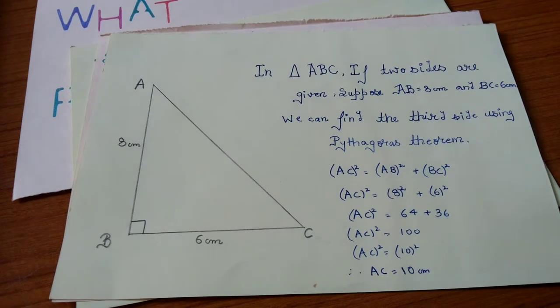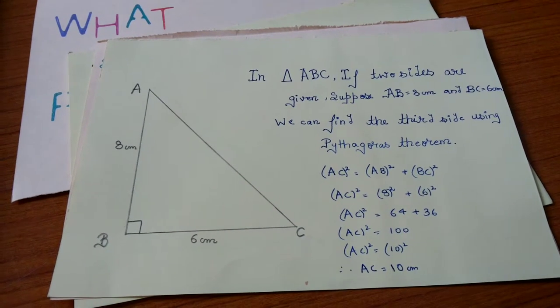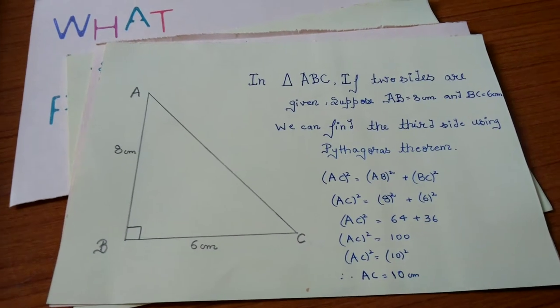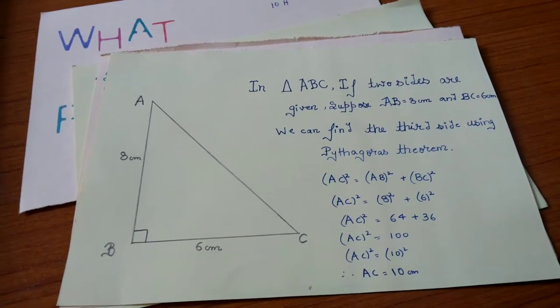AC square is equal to AB square plus BC square which is equal to 8 square plus 6 square. By solving this you get AC is equal to 10 cm.